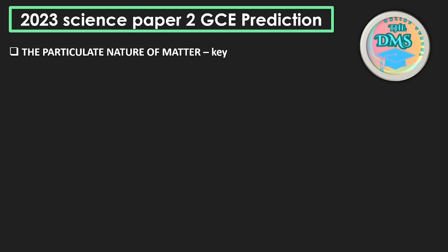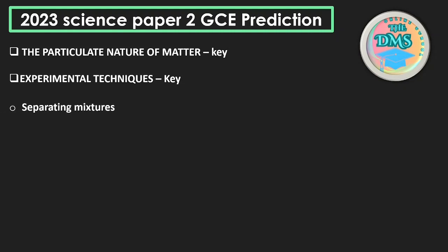The first topic is the particulate nature of matter — this is a key topic that has always been coming. The next is experimental techniques, also a key topic. Under experimental techniques, you look at separating mixtures, which includes techniques such as fractional distillation, chromatography, magnetism, and the separating funnel. Questions have been coming from this area.